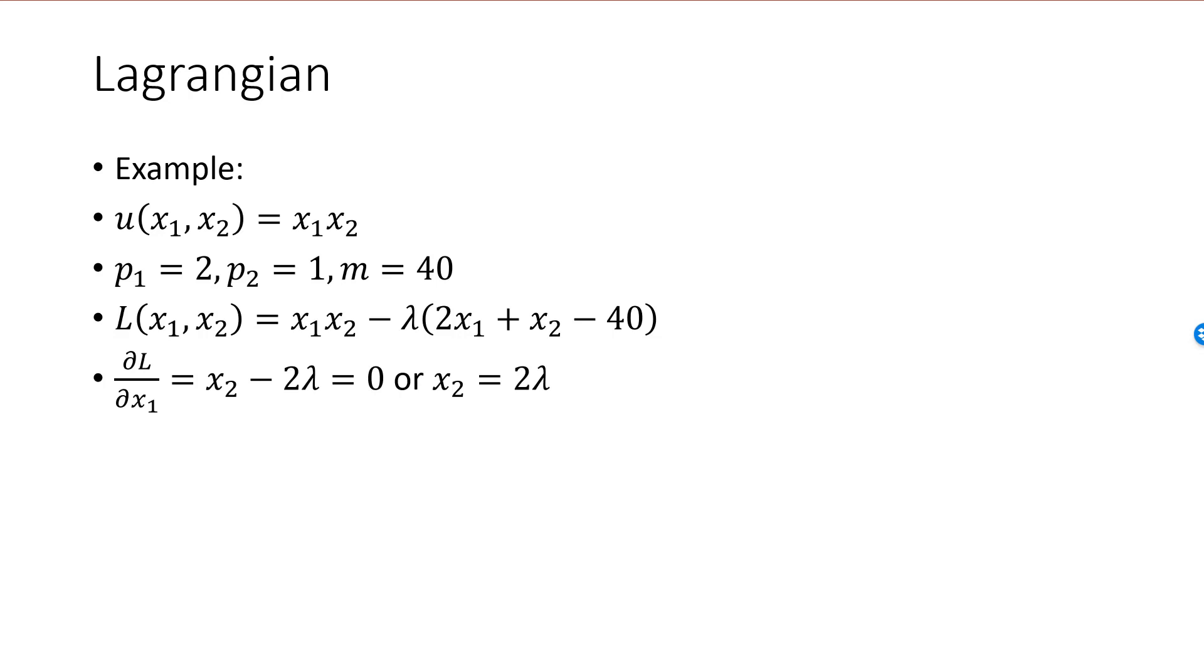We proceed by finding the partial derivatives of the Lagrangian with respect to x1 and x2. Partial L partial x1 is equal to x2 minus 2 lambda, and this must be 0. That is, x2 is equal to 2 lambda. Partial L partial x2 is equal to x1 minus lambda, which we set to 0, and we have x1 equal to lambda. We can simplify these two equations, x2 divided by x1 must be equal to 2 lambda divided by lambda, which is 2, and we have x2 equal to 2x1. This equation is precisely what we found by setting MRS equal to minus p1 over p2 in our strategy 1.